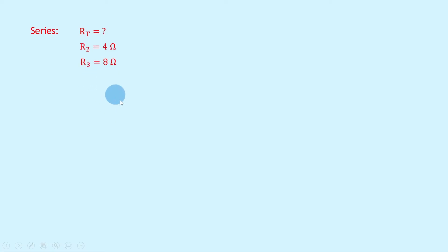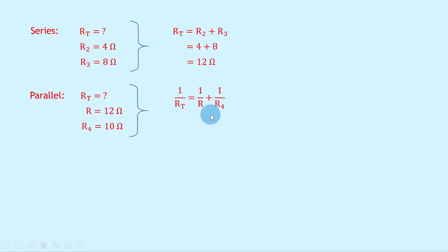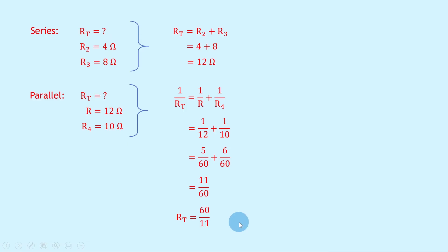For the series combination of R2 and R3: RT equals R2 plus R3, so 4 plus 8 equals 12 ohms. For the parallel combination with R4 (10 ohms): 1 over RT equals 1 over 12 plus 1 over 10. Using the lowest common denominator of 60, this gives 5 over 60 plus 6 over 60 equals 11 over 60. Flipping both sides gives RT equals 60 over 11, which is 5.5 ohms.